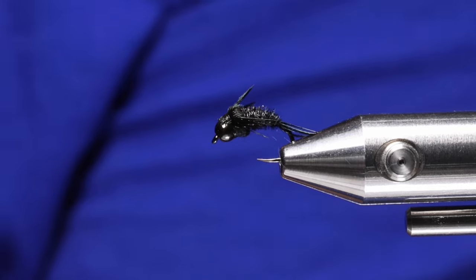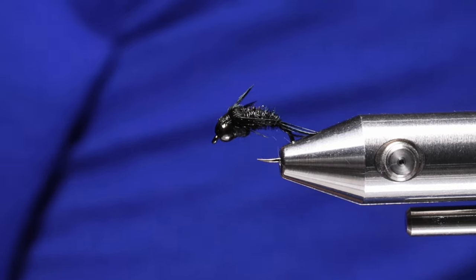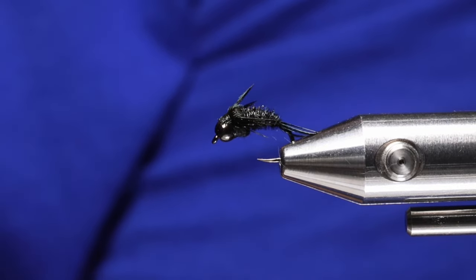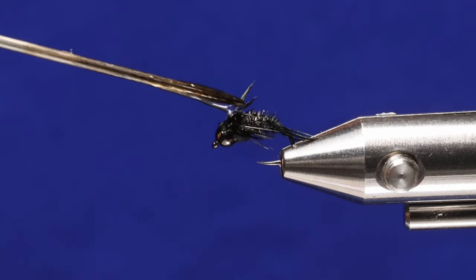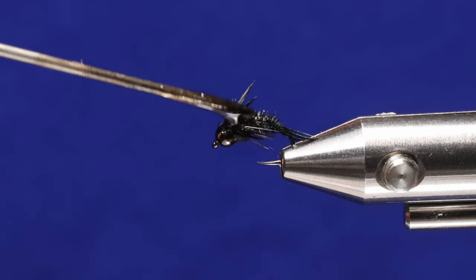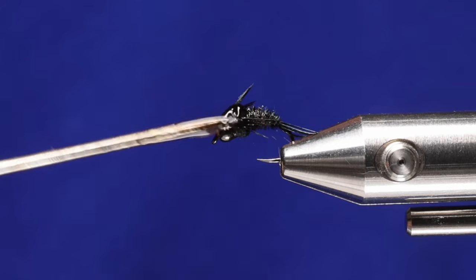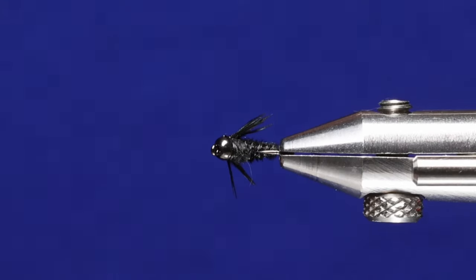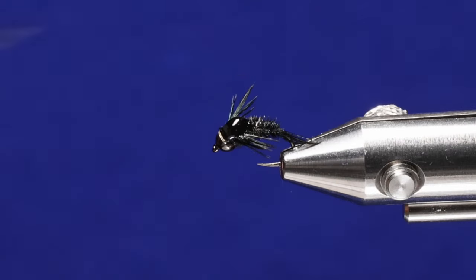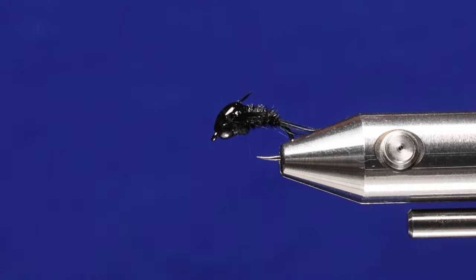And then with my Vodka, I'm going to get the smallest amount of the Solar Res UV Thin and add it right up top there of the wing case. And then just zap it with my light.